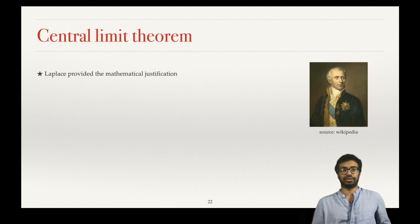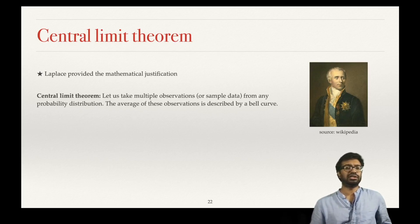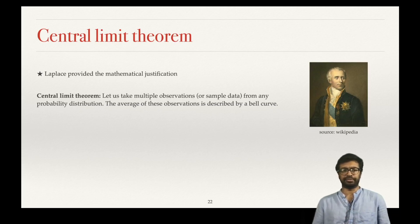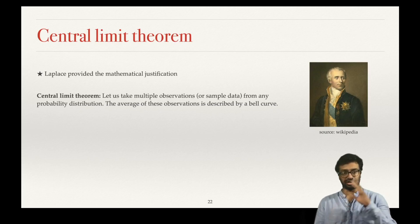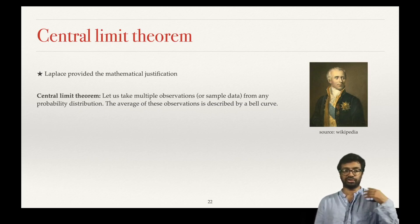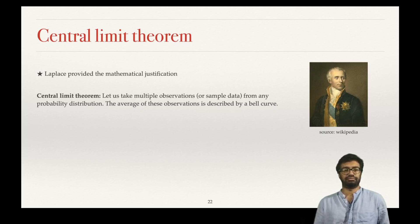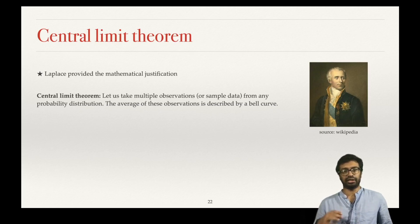But that does not fully explain why the recorded observations follow a bell curve — that is where Laplace comes in. Laplace provided the mathematical justification. This is called the central limit theorem. Laplace said: consider any probability distribution and take some sample data from it. If you take 20 samples and average them, that average is going to be a bell curve.